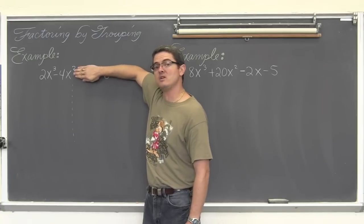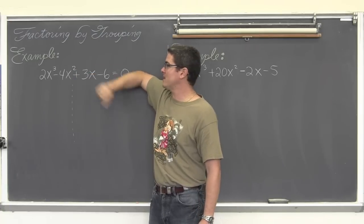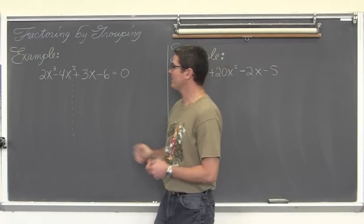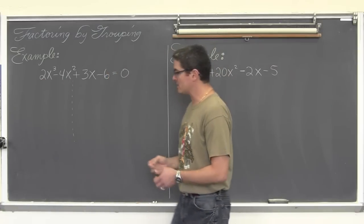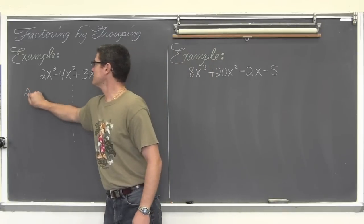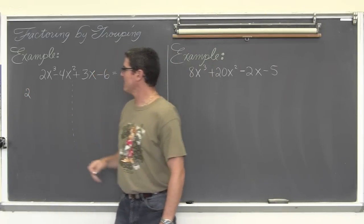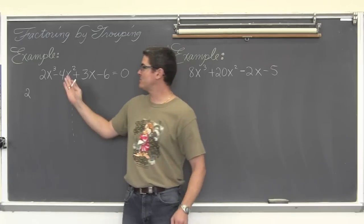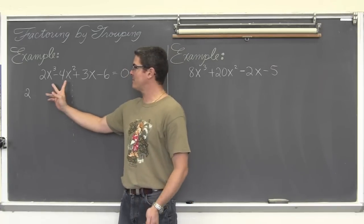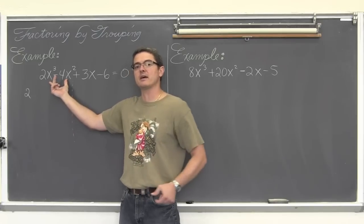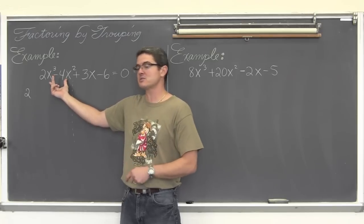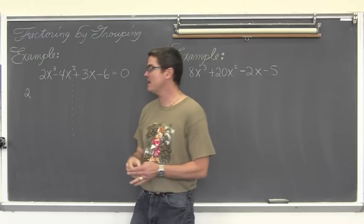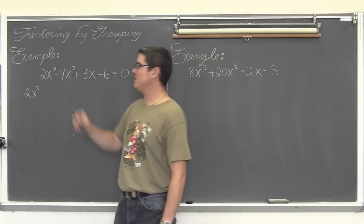Kind of forgetting the rest of the equation, just looking at the 2x cubed minus 4x squared — what can be pulled out of those first two terms? They have leading coefficients that are both even, so we can divide out a 2. That is for the coefficients. Do these two terms both have any common variables? They both have an x. This has three of them, as the exponent shows, and this has two. So I can take out an x squared from each of these terms.